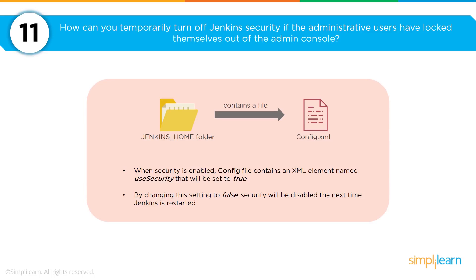How can you temporarily turn off Jenkins security if an administrative user has locked themselves out of the admin console? To resolve this, locate the Jenkins config file. You'll see the security setting is set to true, which enables security. Change the user security setting to false — security will be disabled, allowing you to make administrative changes. Security will not be re-enabled until the next time Jenkins is restarted.